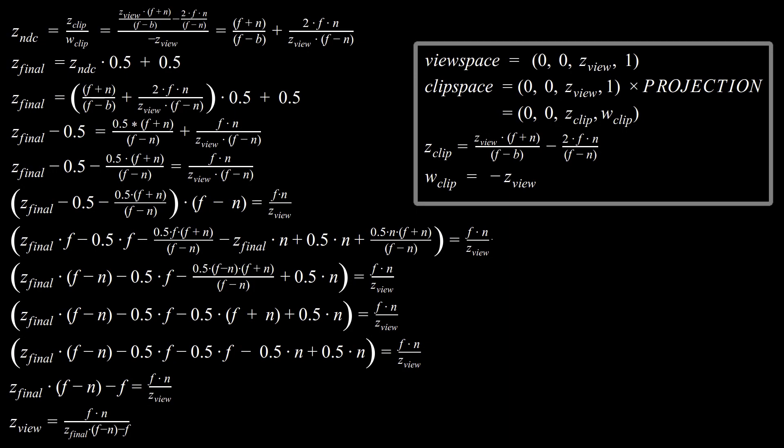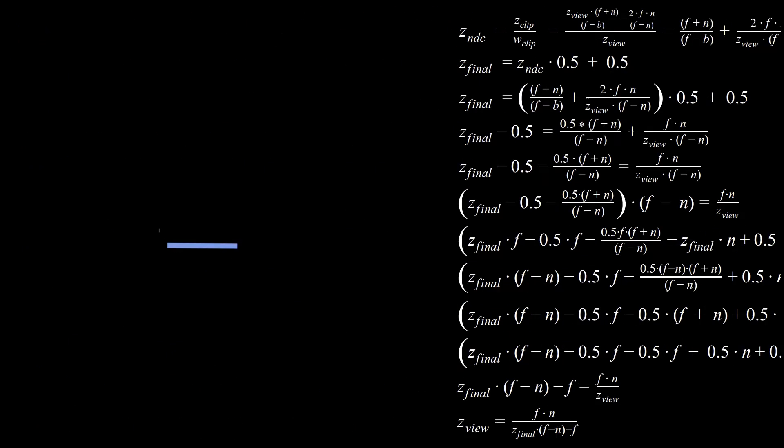What we end up with, finally, at the end, is that ZView is equal to the near times the far divided by far minus near times ZFinal minus F. Where ZFinal is the value that you read from the depth buffer. So, that's a little involved. Sorry about that. It's kind of gross. But, at least you learned something, right?